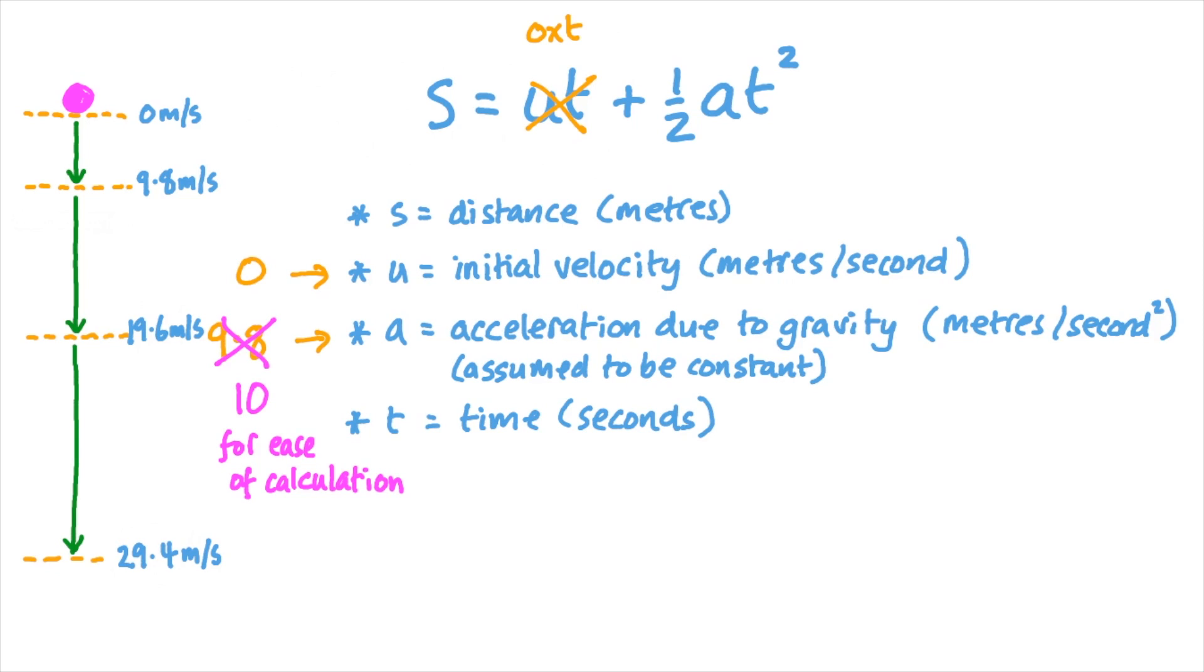And for the sake of convenience, we could round the acceleration to 10 meters per second per second to make our calculations easier because nobody had a calculator with them. So all we needed to do was drop the penny, count how many seconds it took to hit the ground, square that number, multiply the answer by 10, and then halve that result.